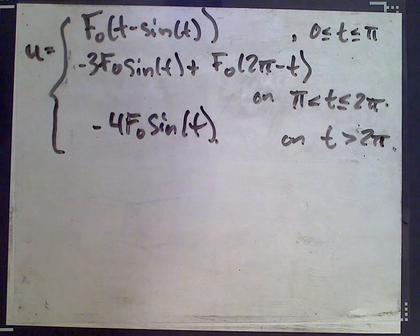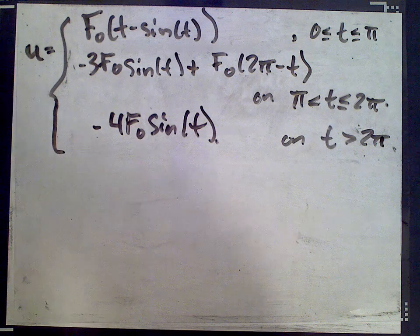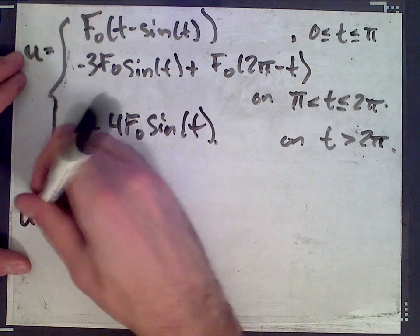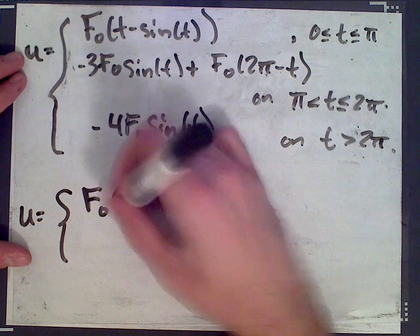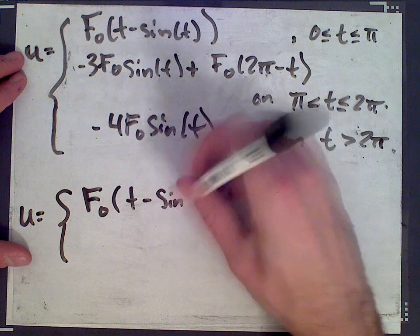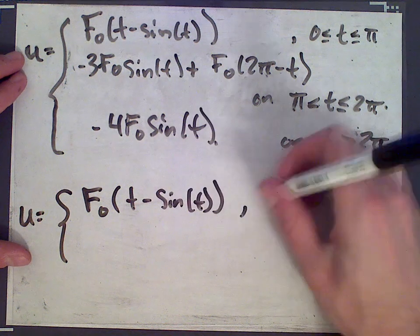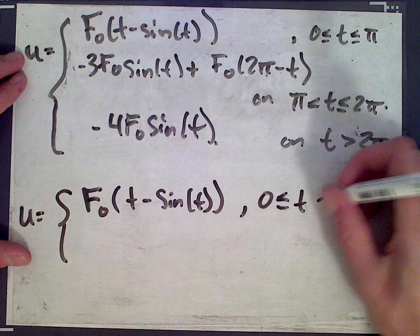Let me make sure everything went okay. It did. So I kind of rewrote it this way as well. So we have f0 times t minus sine t, t is between 0 and π.